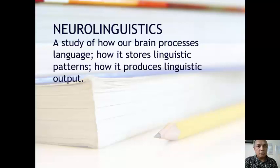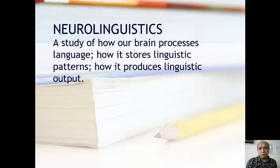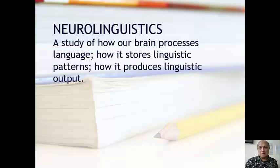I'm going to start with a definition. Neurolinguistics is actually a study of how our brain processes language — how it stores linguistic patterns, how it produces linguistic output. It is logical to see our brain as the source of whatever we do with language. We think about words, store the words, the meanings, the way they're pronounced, the syntactic patterns, the morphemes, etc. It's because of the working of the brain which enables us to speak, write, and understand language.